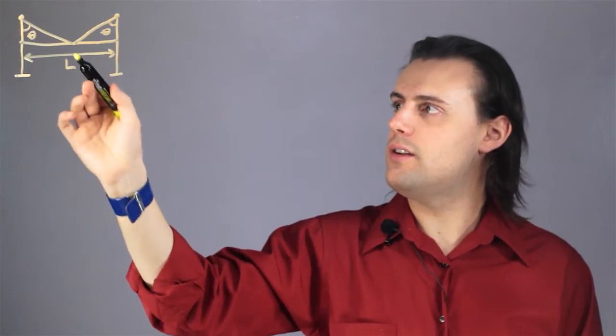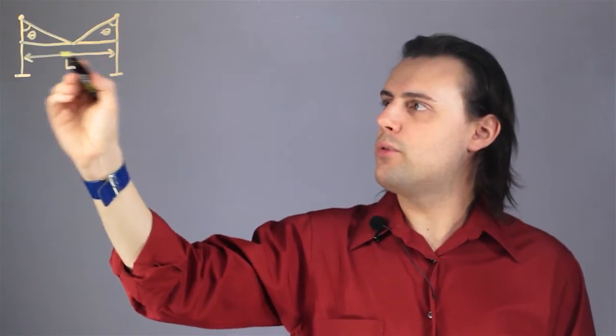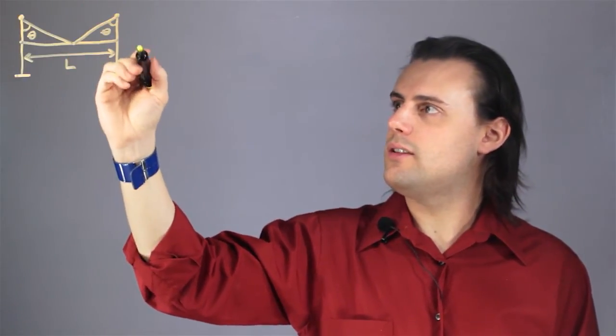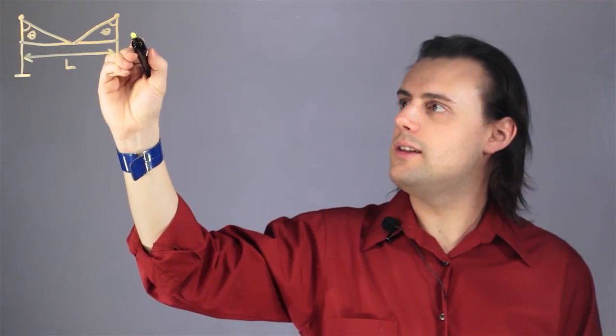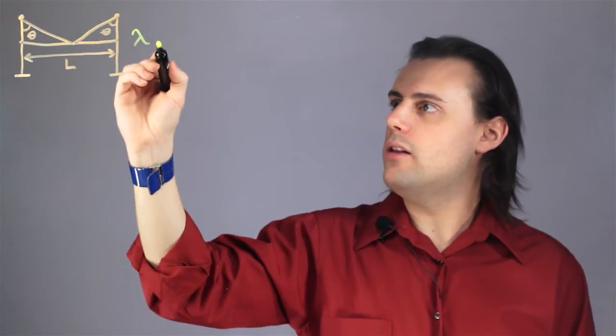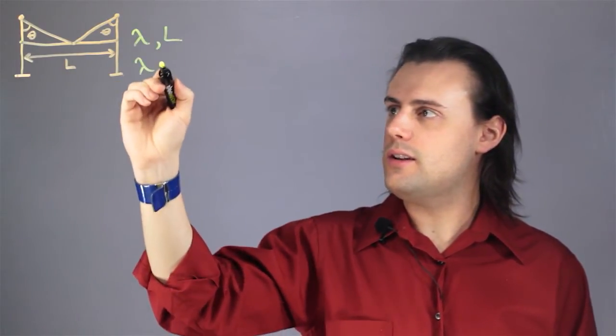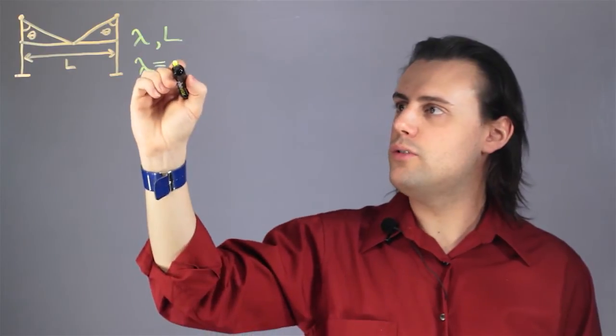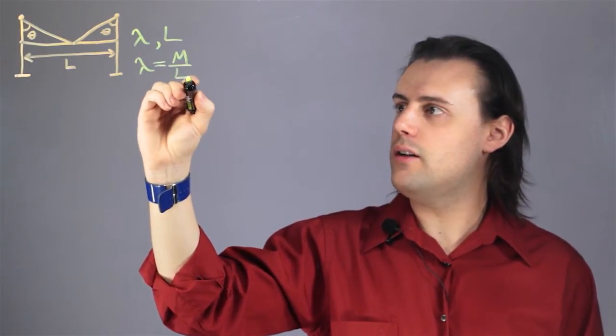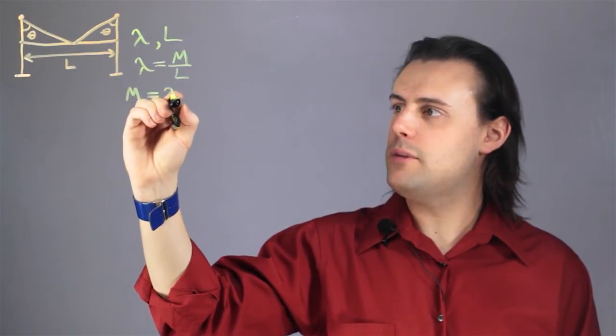So this bridge, if it has a certain density, linear density lambda, and a length L, then I know that since the density is equal to the total mass divided by L, then the mass of the bridge will be equal to lambda times L.